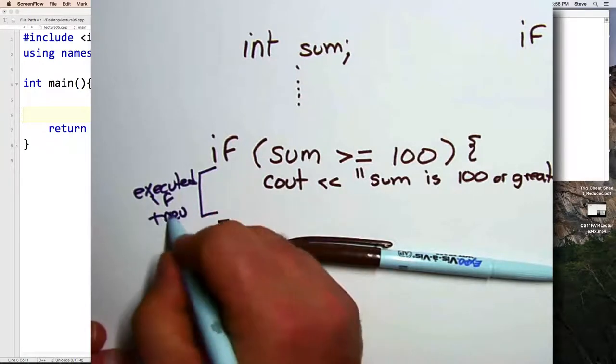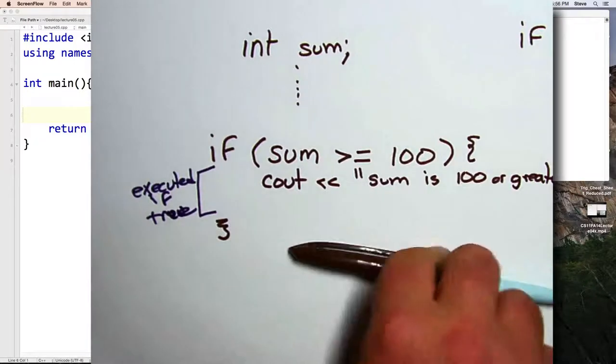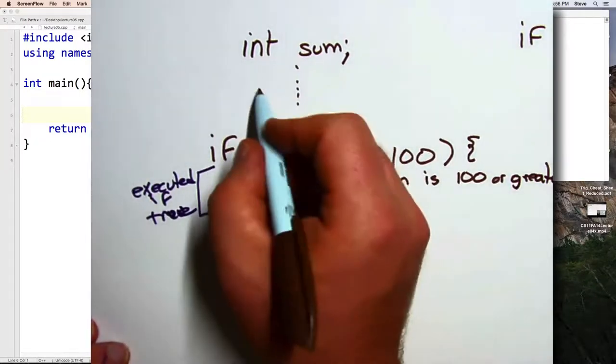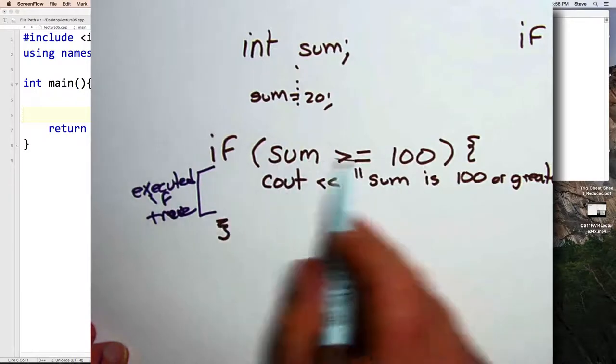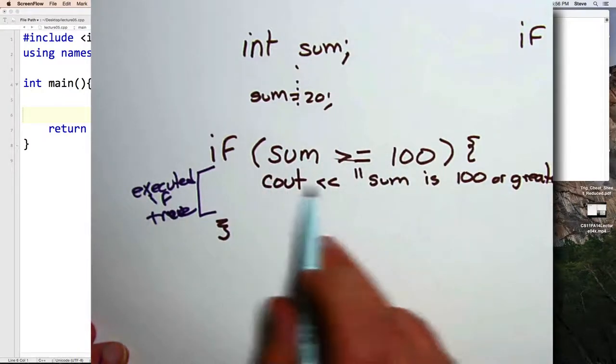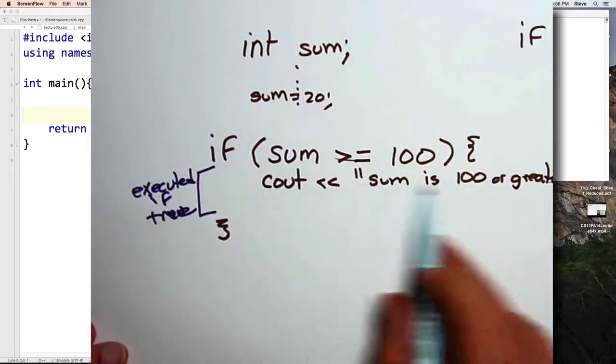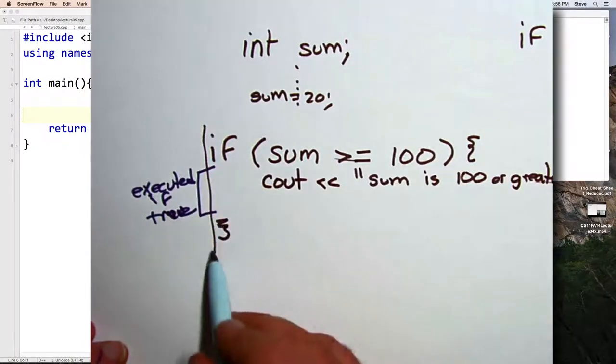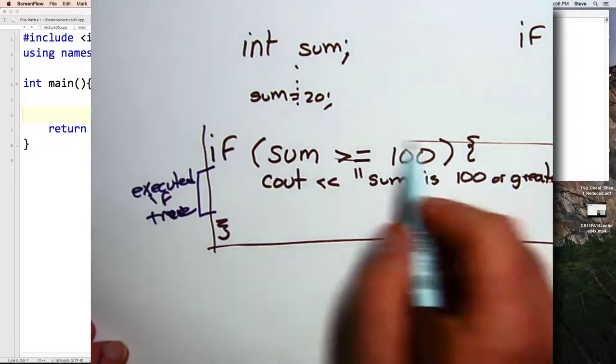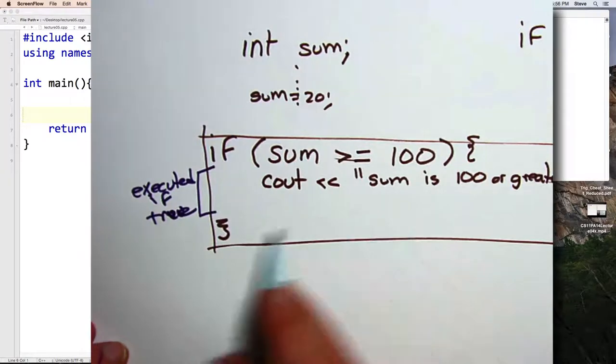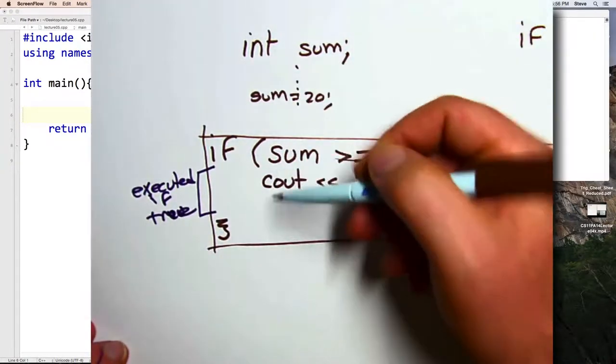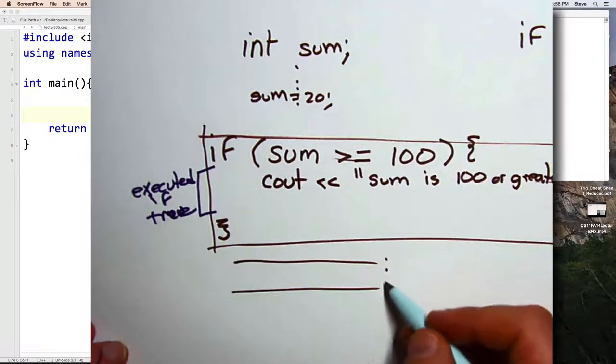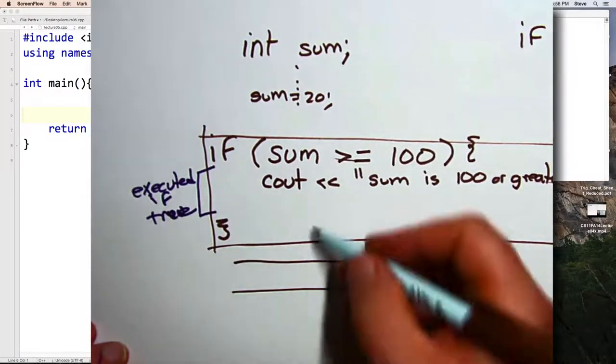And if that condition turns out to be true, then it will execute these commands here between the opening and closing brace. Executed if true. Now, what if this is false? What if we say sum equals 20? Then this is false, and this command here does not get executed. In either case, the if command, although it's a little bit more complex than the commands we've seen before, is still just a command. And after it's executed, the computer would then continue on executing whatever commands followed it.